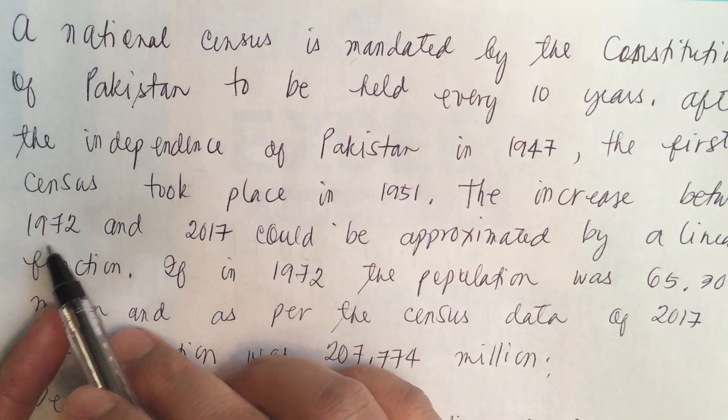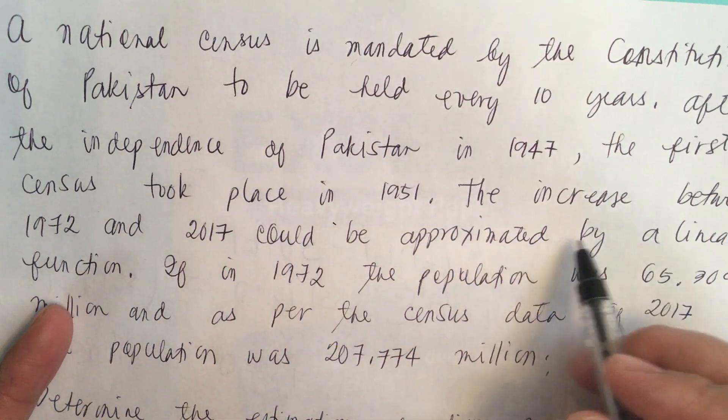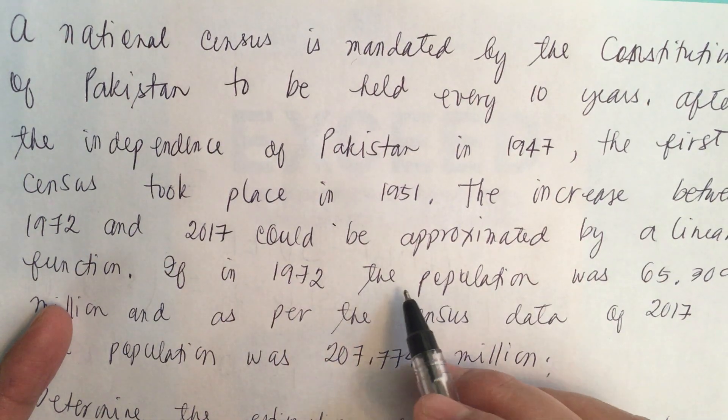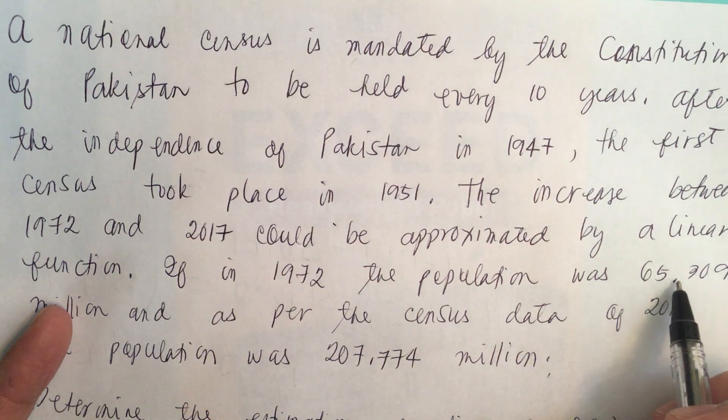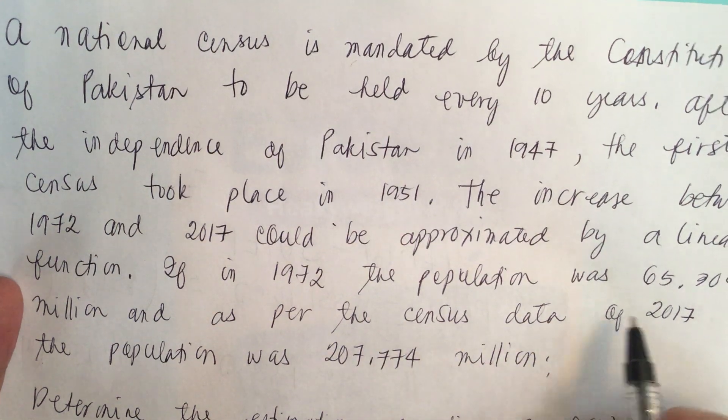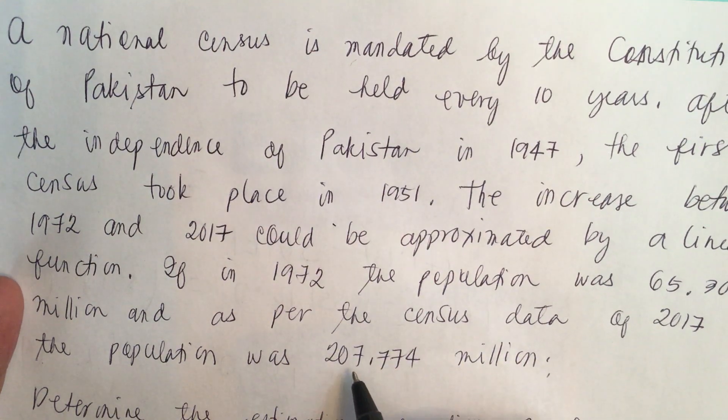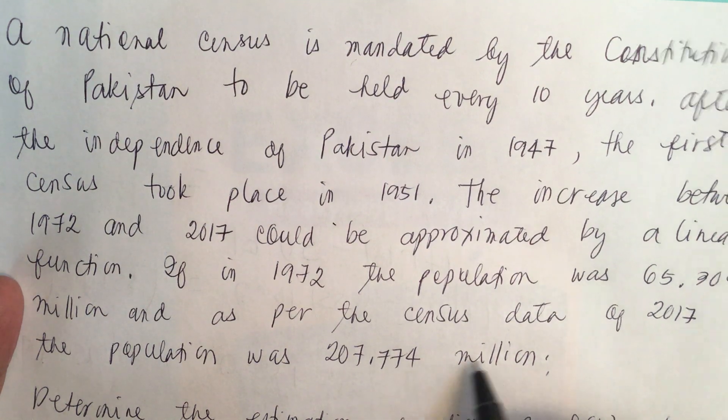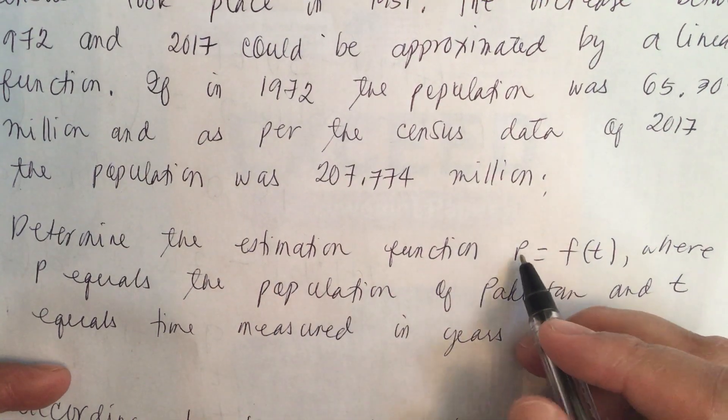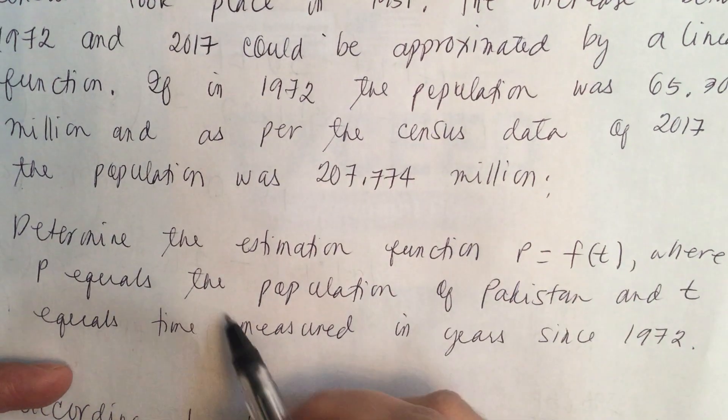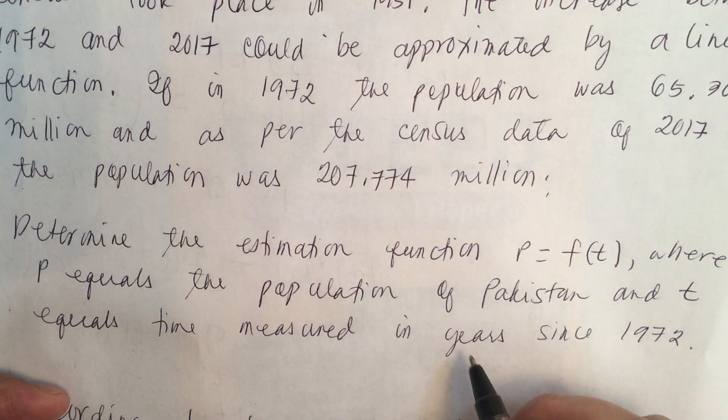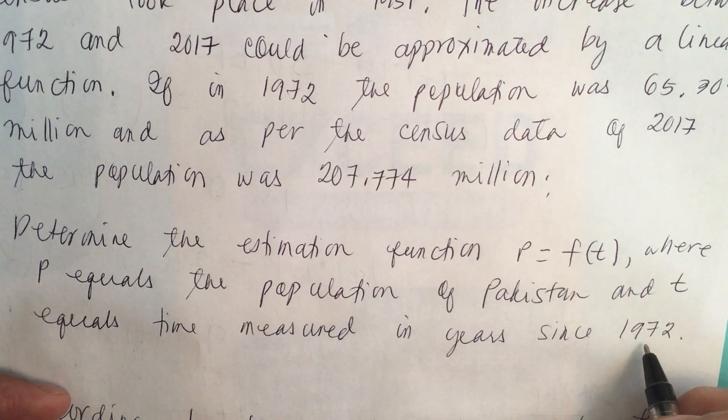The increase between 1972 and 2017 could be approximated by a linear function. If in 1972 the population was 65.309 million, and as per the census data of 2017 the population was 207.774 million, determine the estimation function P equals F of T, where P equals the population of Pakistan and T equals time measured in years since 1972.